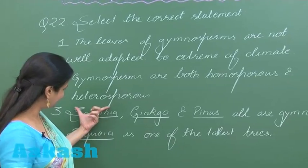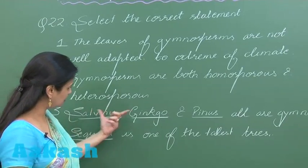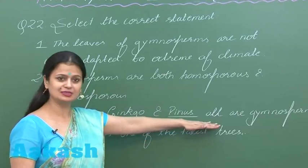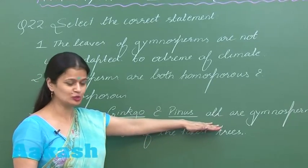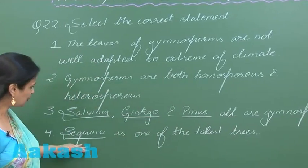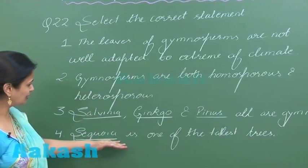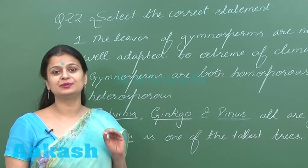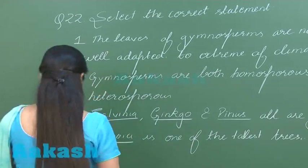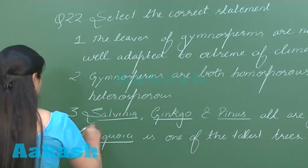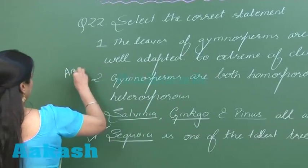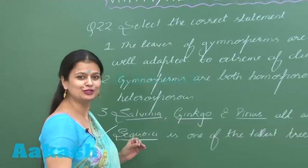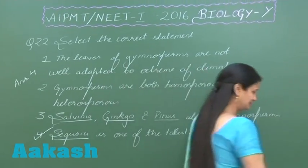Salvinia is a pteridophyte, while Ginkgo and Pinus are gymnosperms, so that statement is also incorrect. Sequoia is one of the tallest trees — it's the redwood tree. So the right option for this question is option number 4. Let's move on to question number 23.